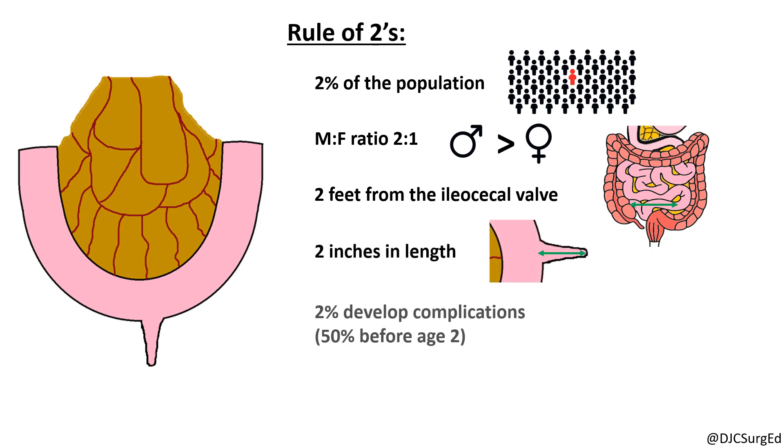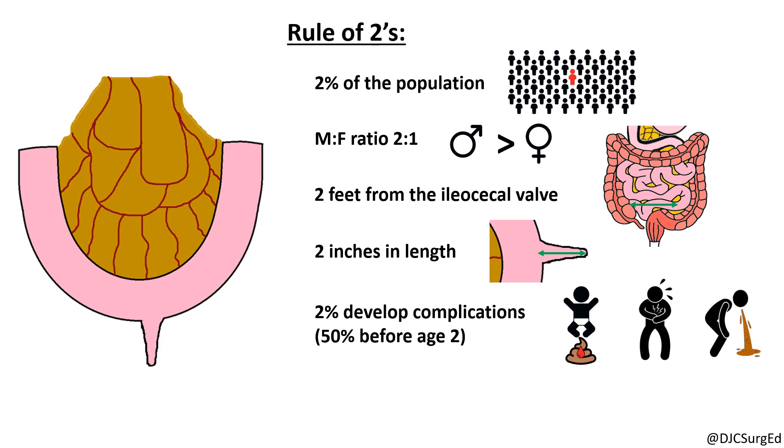Approximately 2% of patients develop a complication over the course of their lives, most often before the age of 2. The two most common types of heterotopic mucosa are gastric and pancreatic, although others include colonic, duodenal, and endometrial.